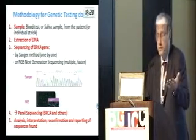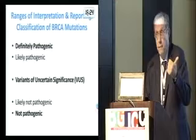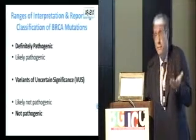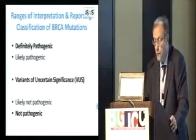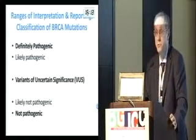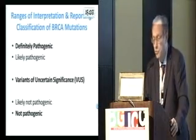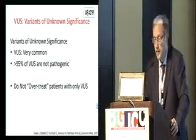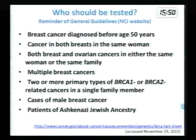When reporting the sequences found, they could be pathogenic, non-pathogenic, or somewhere in between. We have variants of unknown significance — sometimes a report says likely pathogenic or less likely pathogenic, so it is a range. Those variants of unknown significance are very common, and most are not pathogenic, so we have to be careful not to over-treat patients who only have a variant of unknown significance.